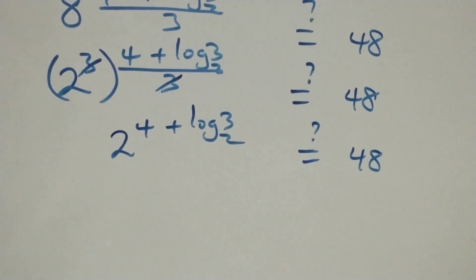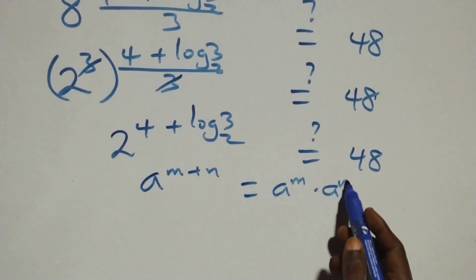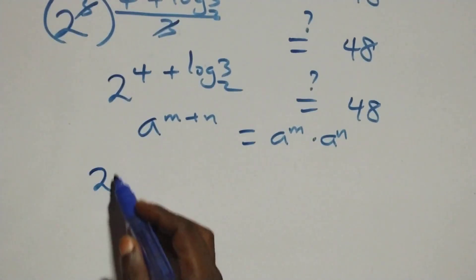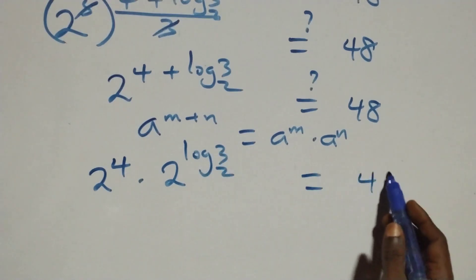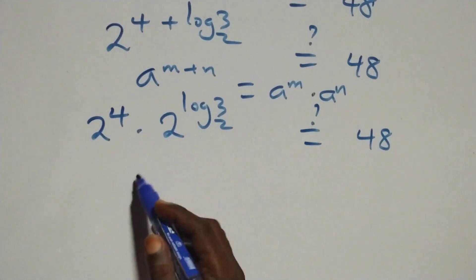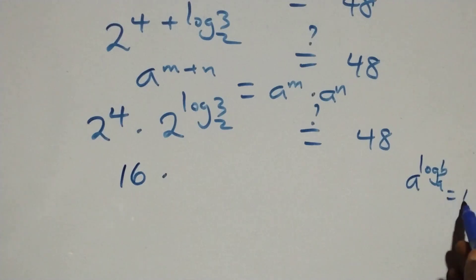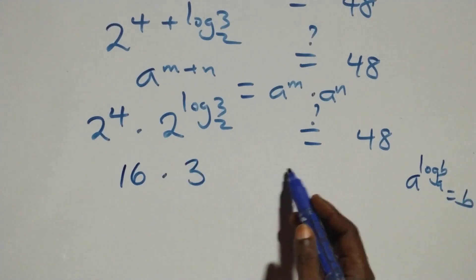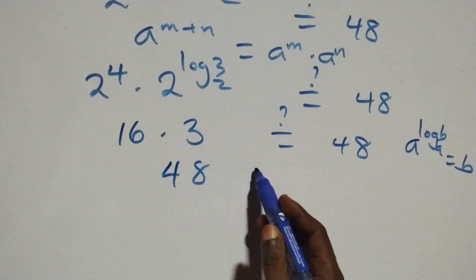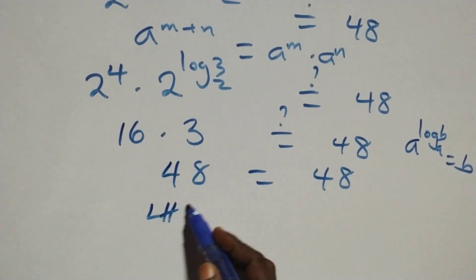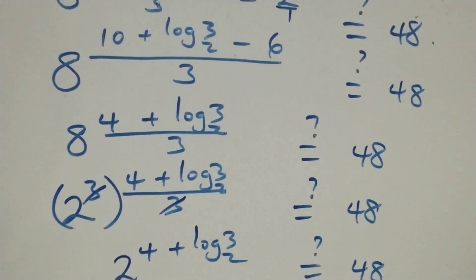Applying the exponential addition rule — a raised to power (n plus m) equals a^n times a^m — we get 2 raised to power 4 times 2 raised to power log base 2 of 3, equals 48. Now 2 to the power 4 is 16, and a raised to power log base a of b equals b, so 2^(log₂3) equals 3. Therefore, 16 times 3 equals 48, which equals 48. Left-hand side equals right-hand side, confirmed.